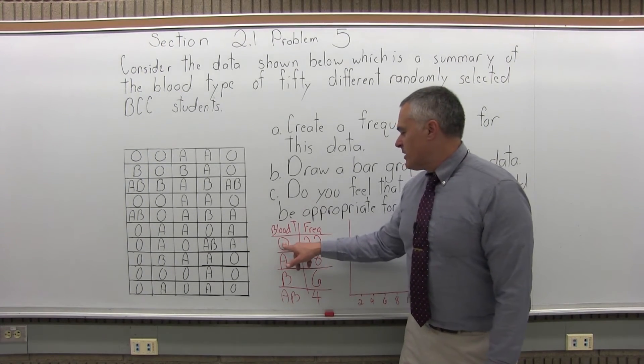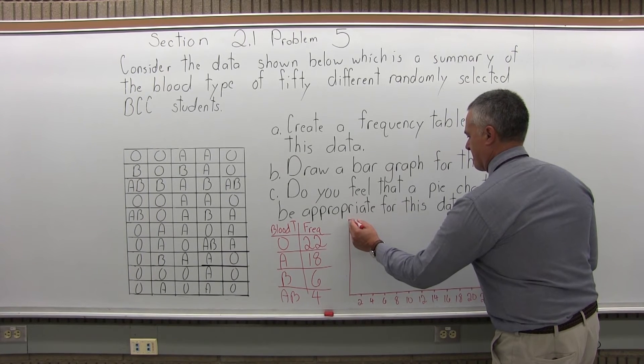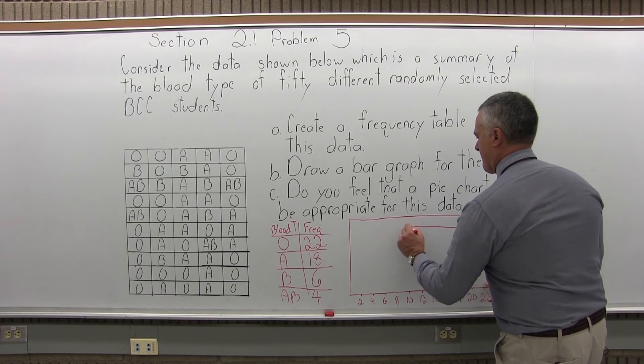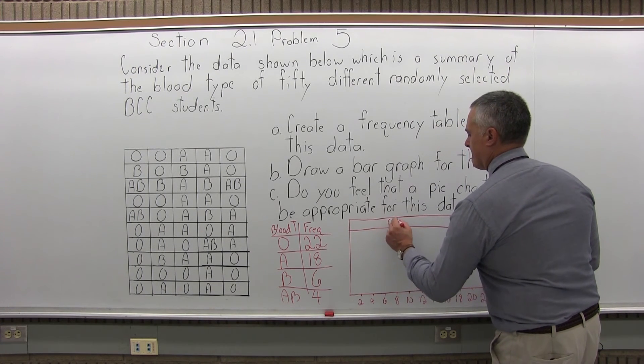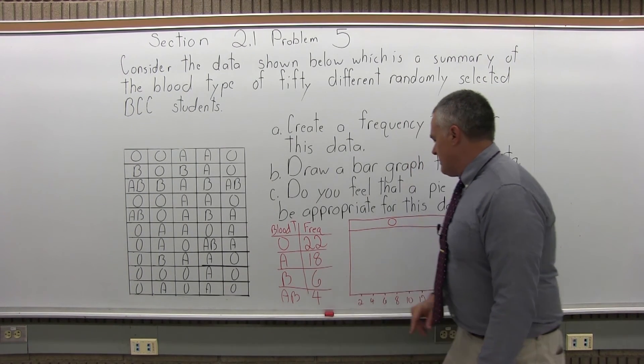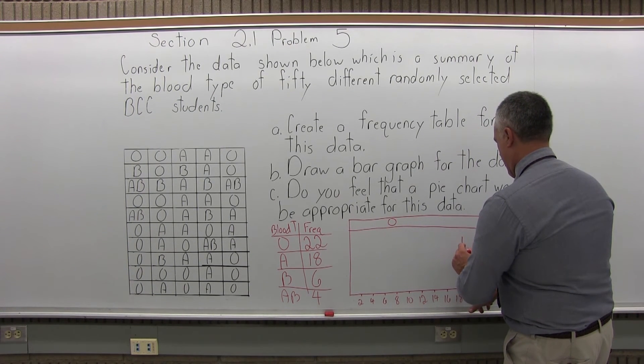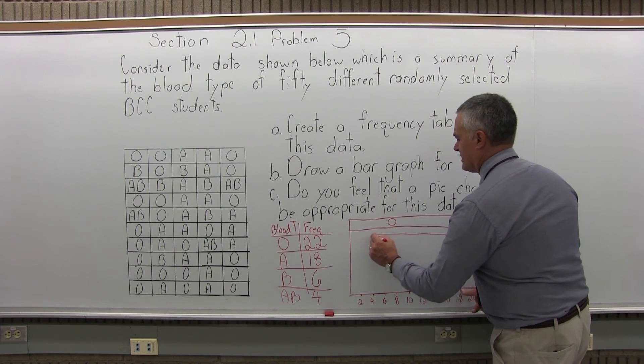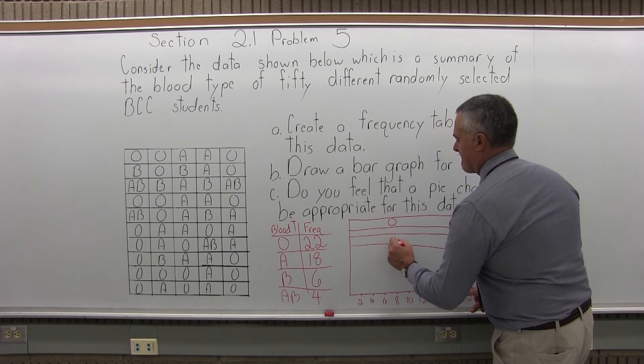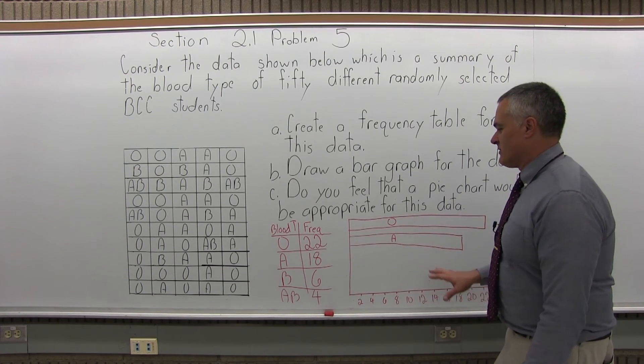So the first bar for blood type O goes out to 22. So it has 22 on my number scale. Blood type O. The next blood type A goes out to 18. I do have an 18 on my number scale. Notice my bars don't touch. I label the bar. It's A. And you can label it at the left edge also if you like or right on the bar.